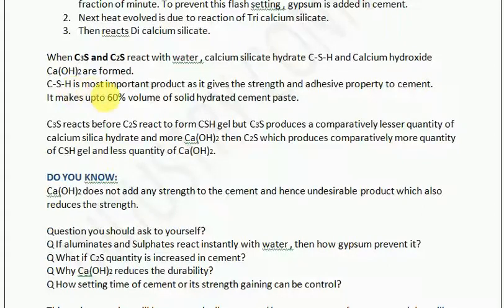CSH gel is the most important product as it gives strength and adhesive property to cement. It makes up 60% of the volume of solid hydrated cement paste. When we use raw materials through dry or wet process, we obtain four chemicals: dicalcium silicate, tricalcium silicate, tricalcium aluminate, and tetracalcium aluminoferrite. When we add water, first aluminates react, then tricalcium silicate reacts, and finally dicalcium silicate reacts.